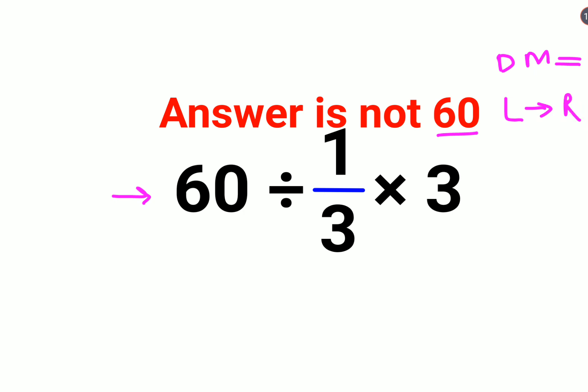So first we'll do 60 divided by... sorry, divide by one by three. So whenever you have a division sign, you always follow the rule of KCF. What does K mean?